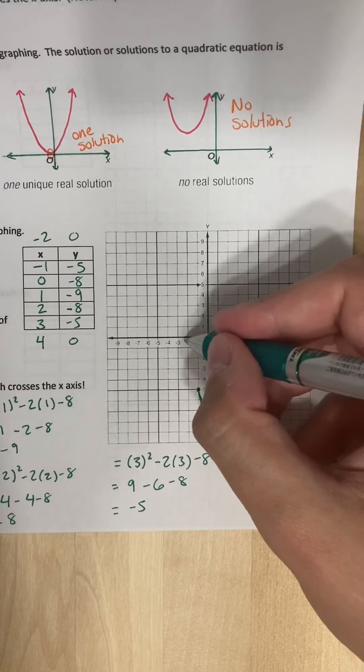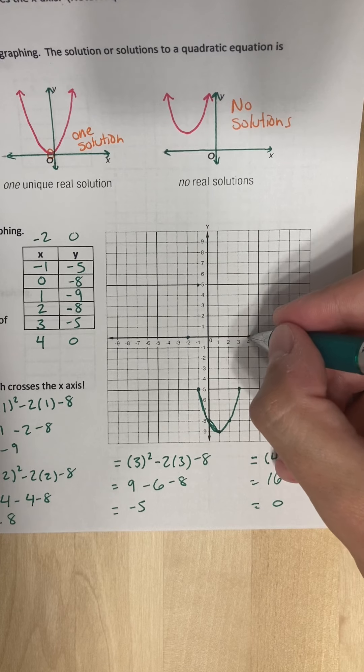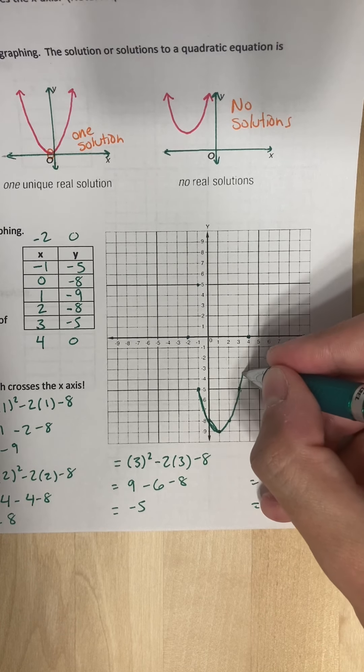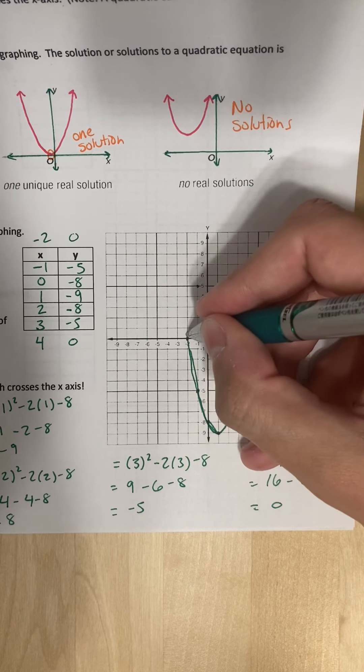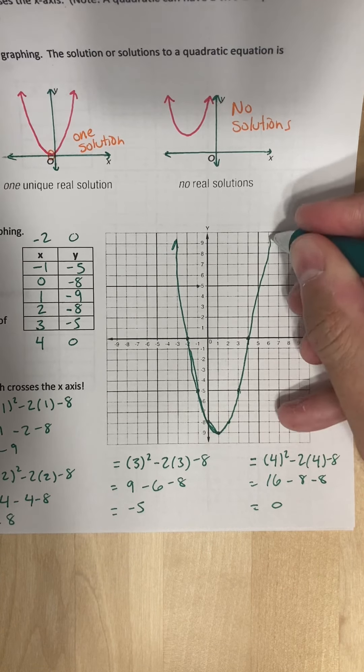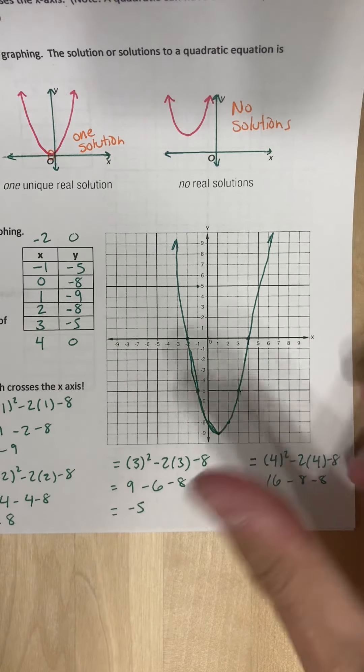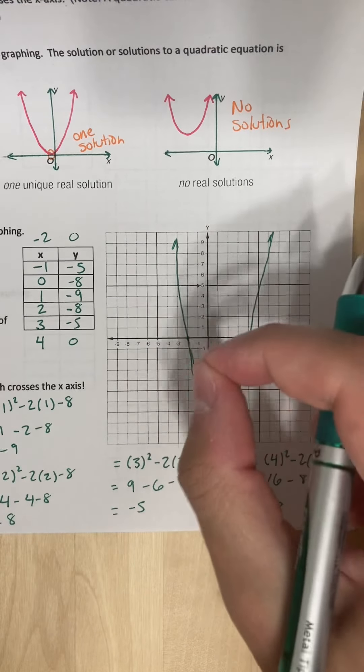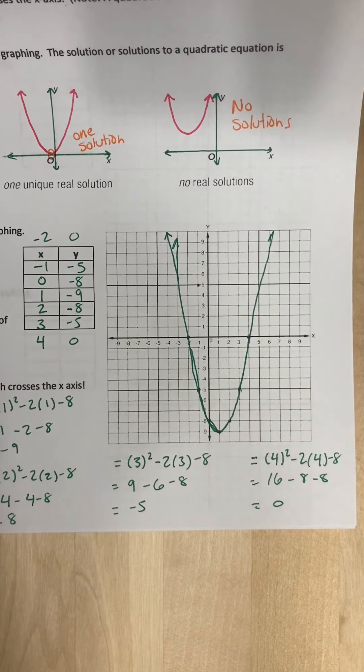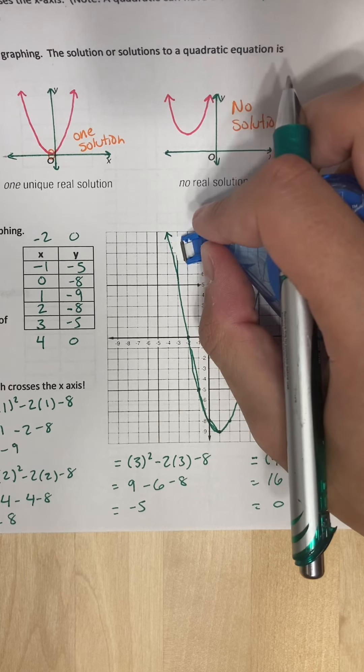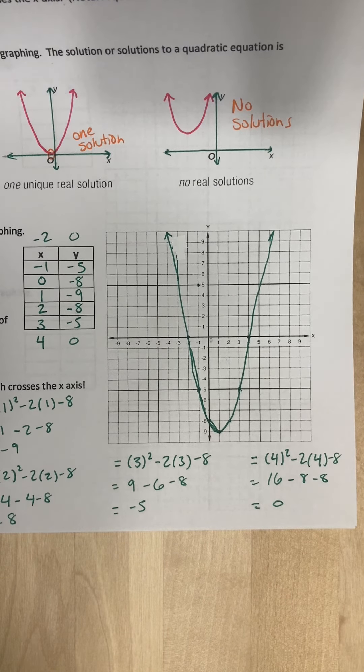So then if we come back over here and we graph it, negative 2, 0 is going to be here. And 4, 0 is going to be here. And ha-ha, what do you know? I have my two solutions. So this is going to keep going off in this direction. This is going to go off in this direction. And make sure they don't look like pincers, okay? It should be a U-shape. So this should go out more. There we go. It looks a little better.